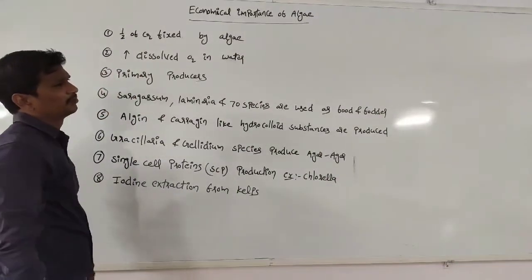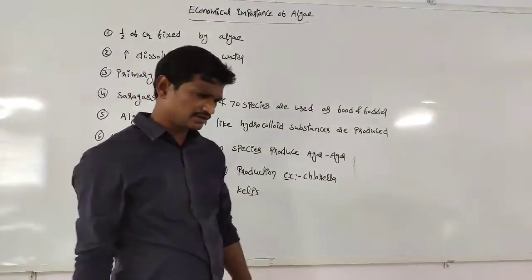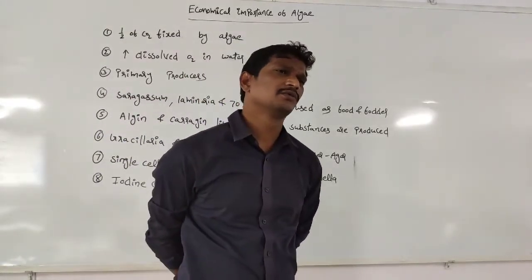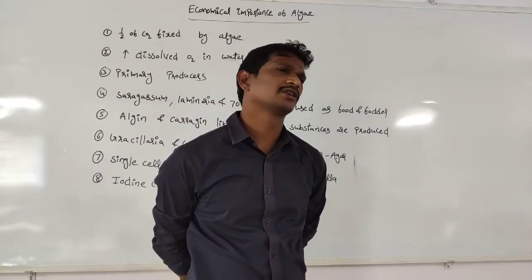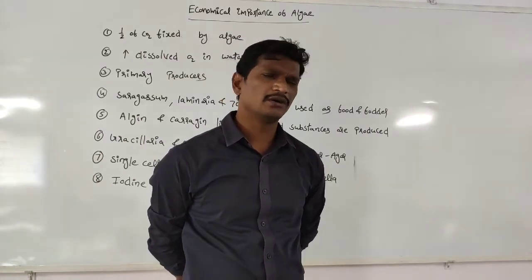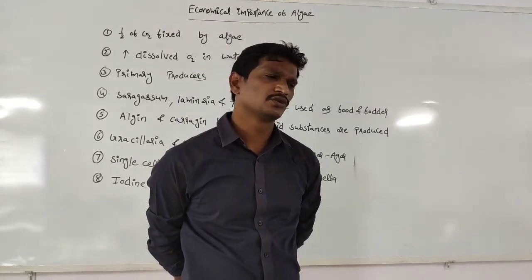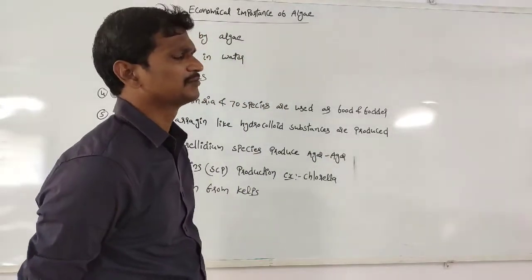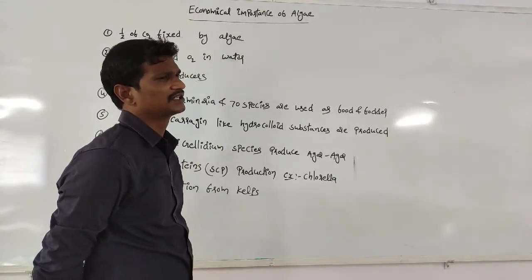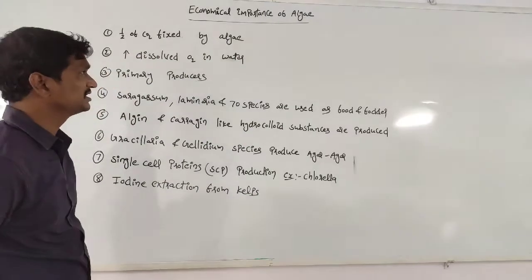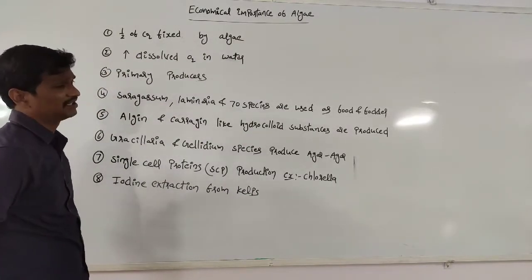Coming to the next topic: the economic importance of algae. The very first point is that half of the total carbon dioxide is fixed by the algae. The concept is simple: the maximum portion of the earth is covered by water — only one third is land. All aquatic algae perform maximum photosynthesis, so more carbon dioxide is absorbed. Half of the total CO₂ present on earth is fixed by algae.